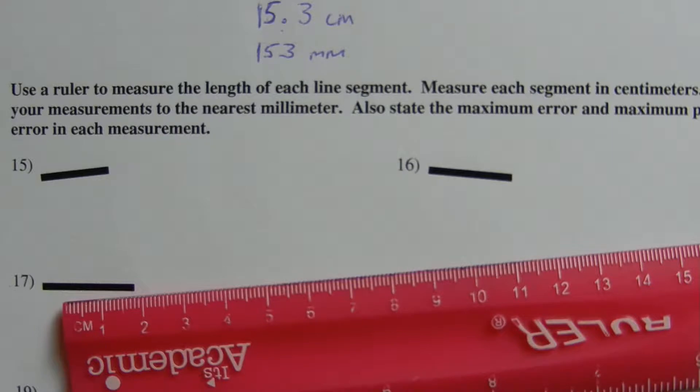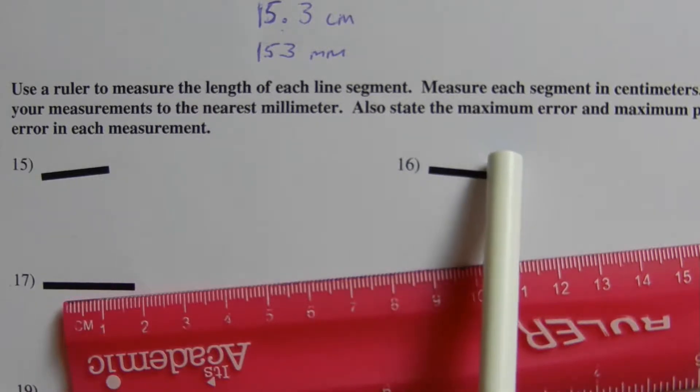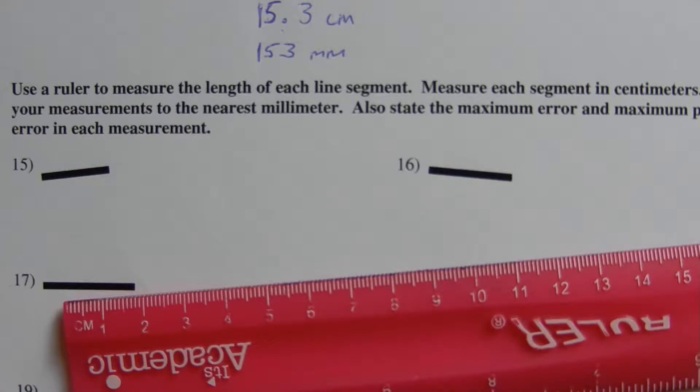Our next set of directions say to use a ruler to measure the length of each segment. We're measuring the segments in centimeters and rounding to the nearest millimeter. That's like what we did in the first half of this worksheet. However, now we're also going to state the maximum error and the maximum percent of error in each measurement.